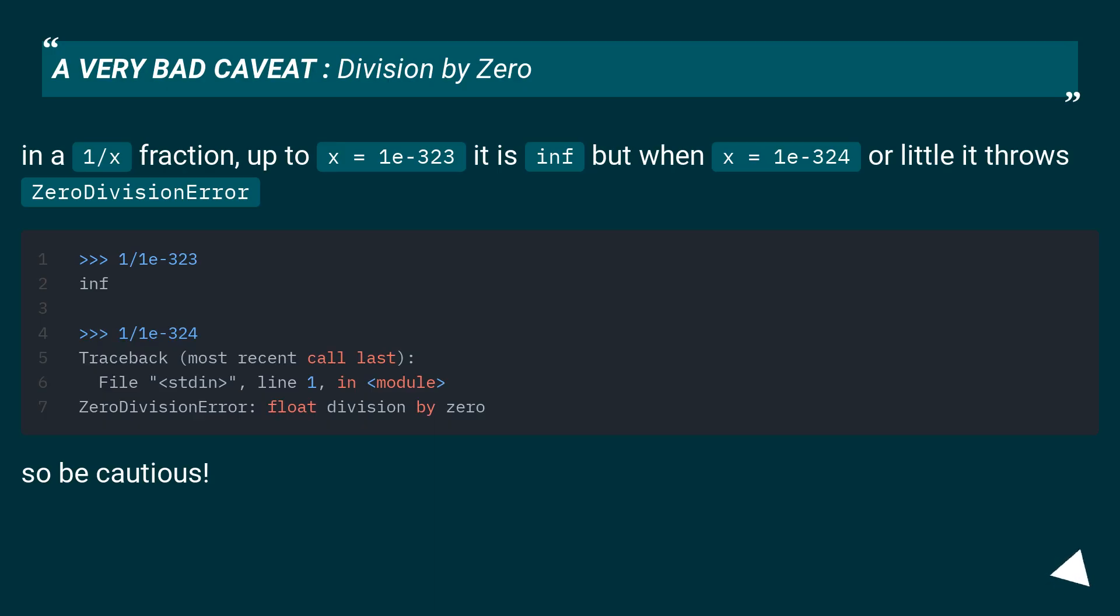A very bad caveat. Division by 0.0. In a 1 divided by x fraction, up to x equals 1e minus 323 it is inf, but when x equals 1e minus 324 or less, it throws zero division error.